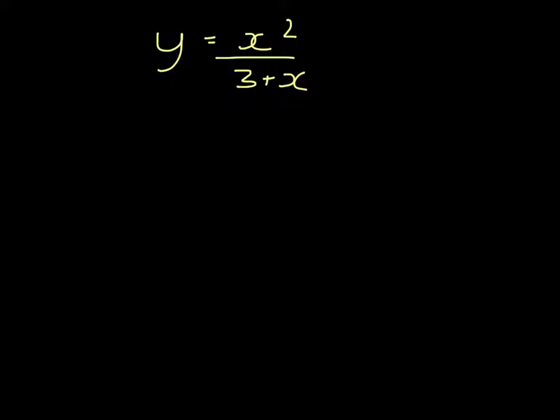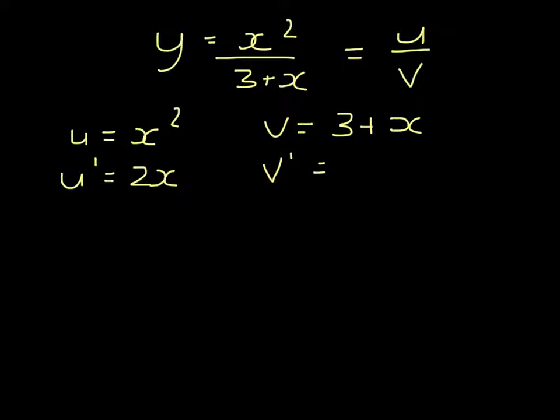I'm going to differentiate a quotient. We let the numerator be U. So U equals X squared, and the differential of U is 2X. And the denominator be V. So V equals 3 plus X, and the differential of that is 1.